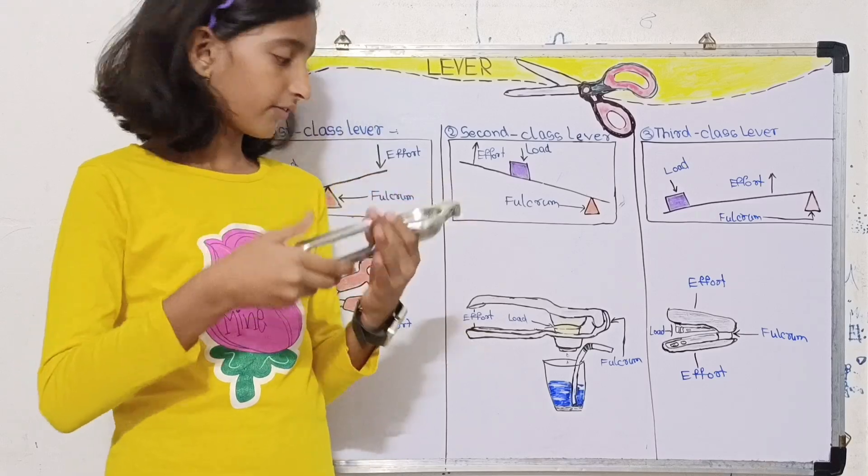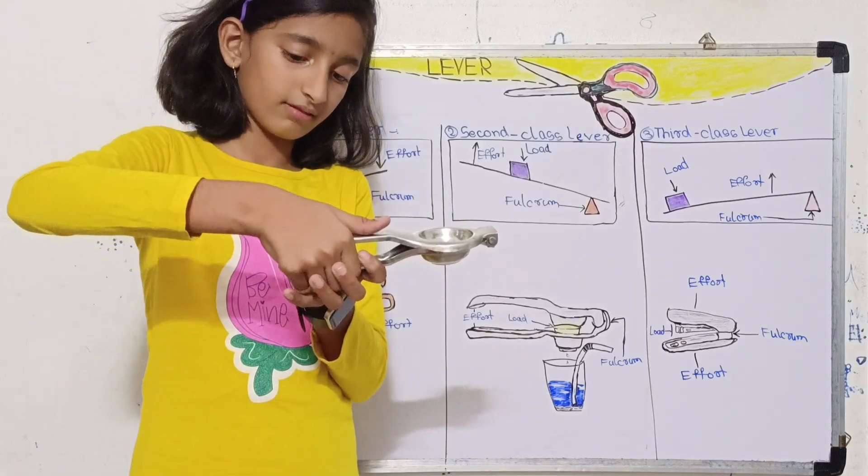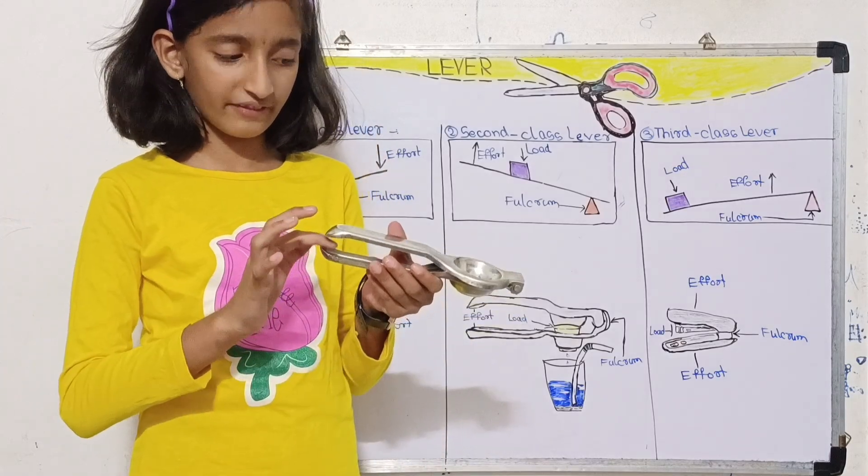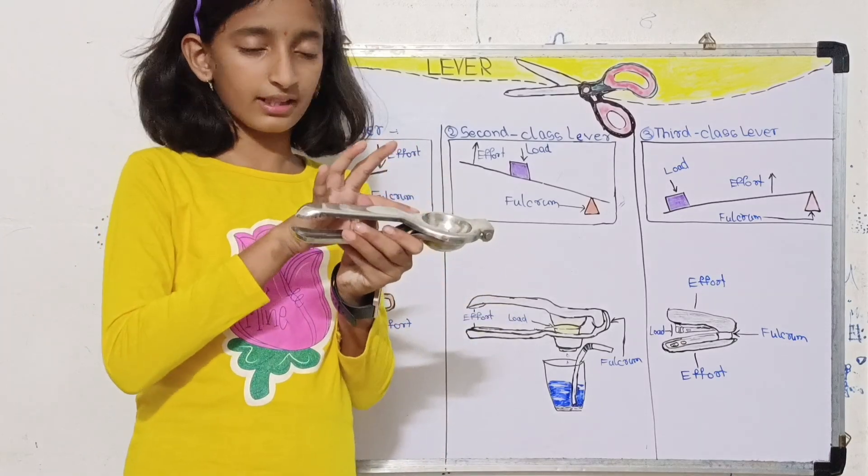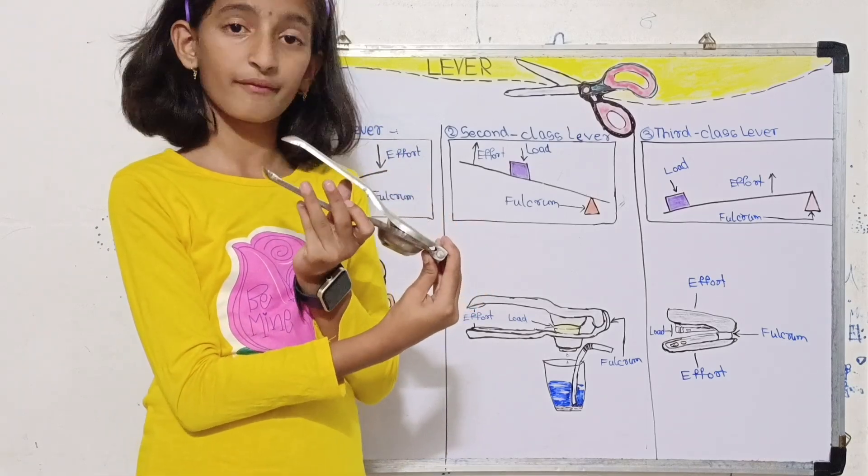Our energy is used here and this is the point called the effort. Here we put effort and you can see as I'm pressing, the lemon is being squeezed and the fulcrum point is keeping them fixed and joined.